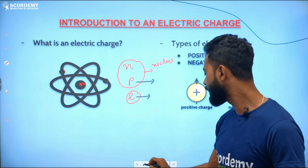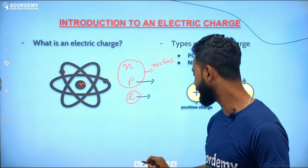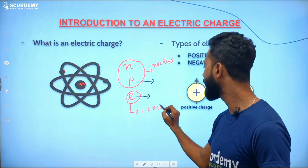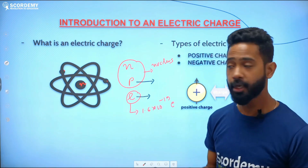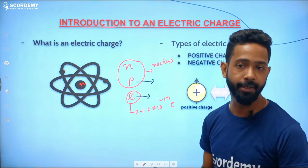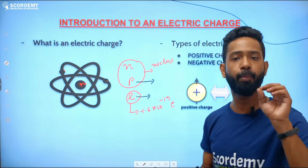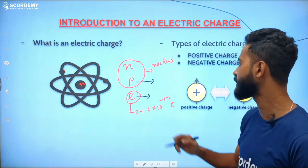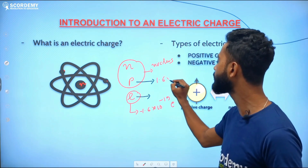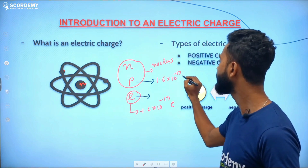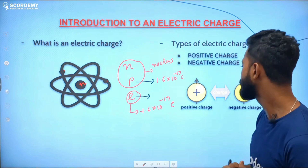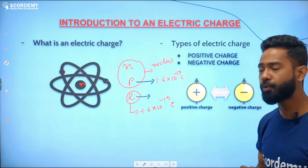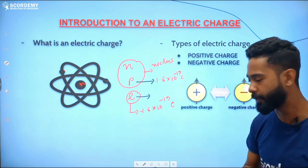The value of the negative charge for an electron is equal to minus 1.6 into 10 to the power minus 19 coulombs. The value of a protonic charge — the positive charge — is exactly the same magnitude: positive 1.6 into 10 to the power minus 19 coulombs. So there are only two types of charges: positive charge and negative charge. Let us now move ahead to understand the properties of these charges.